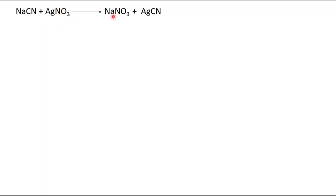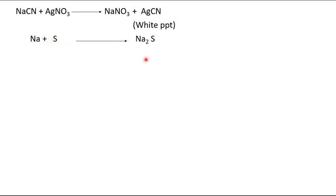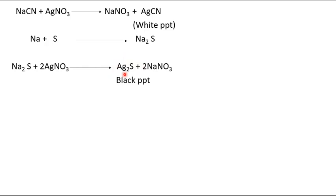Similarly, if a sulfur-containing organic compound is present, we get sodium sulfide in the Lassaigne's extract. Sodium sulfide reacts with silver nitrate to give silver sulfide, which interferes. Our aim is to detect the presence of halogen without nitrogen or sulfur interfering with the test.